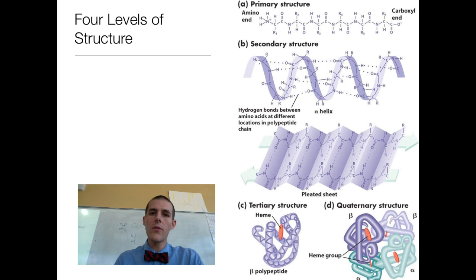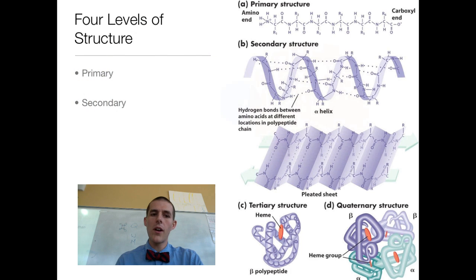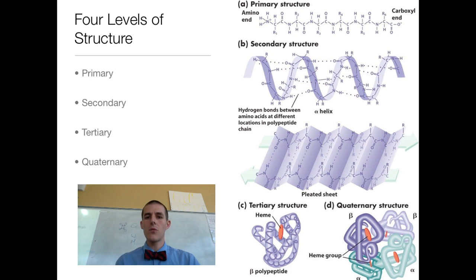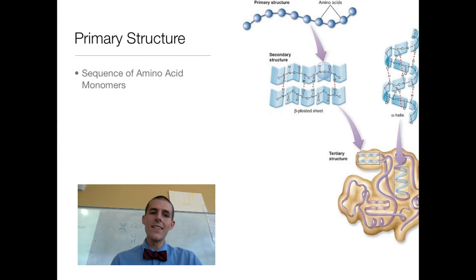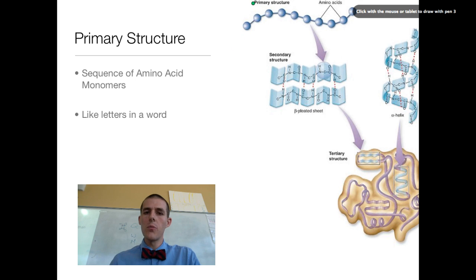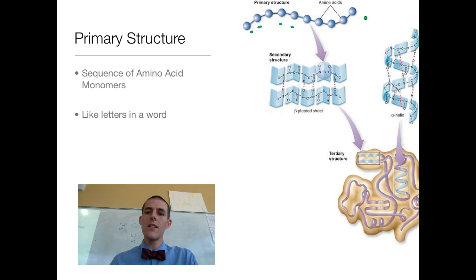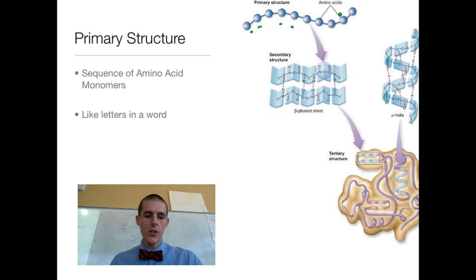The last thing we need to talk about today are the four levels of protein structure. Students often find this difficult, so stick with me. There are four levels — you can see them on the right side. Starting with primary structure: it is the sequence of amino acid monomers, and you can think of it as the letters in a word. There are 20 amino acids, which means you can combine them in almost an infinite number of orders and combinations. Whatever order those amino acids are in, that is the primary structure of the protein.